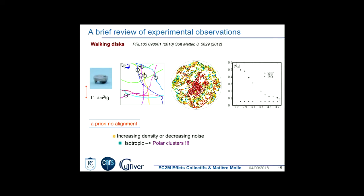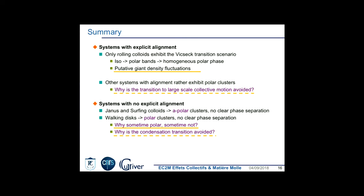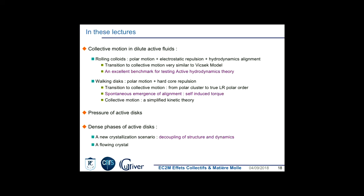Now with 40 minutes remaining: what I want to discuss in this lecture is collective motion in two systems. First, the rolling colloids, which are an excellent benchmark for testing active hydrodynamics theory because they present all the phenomenology expected from the Vicsek model study. Second, the walking discs, which display collective motion despite being discs — so we don't know where the alignment comes from. This is interesting because it relates to the fact that velocity and polarity are not the same thing, which is the case for most real objects.